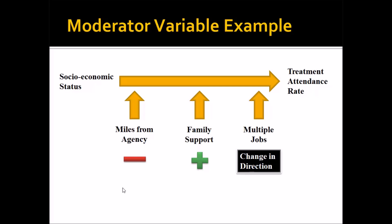The second moderator is family support. As family support increases, the treatment attendance rate would tend to increase. This is also a moderator variable — in this case, it increases the strength of the relationship between the independent variable and the dependent variable.